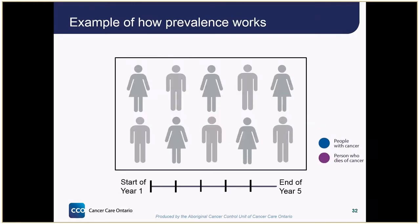Here's an example of how prevalence works. In this case, we'll be looking at 5-year prevalence — in other words, anyone alive in a population who was told they had cancer sometime in the last 5 years. During the first year, one person was diagnosed with cancer.